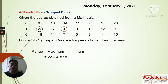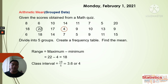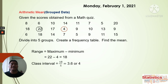Since we're dividing into five groups, we find the class interval: range divided by number of groups. That gives us 3.6, which we round up to 4. Even if the decimal is 3.2, 3.3, or 3.4, we still go to the next whole number.